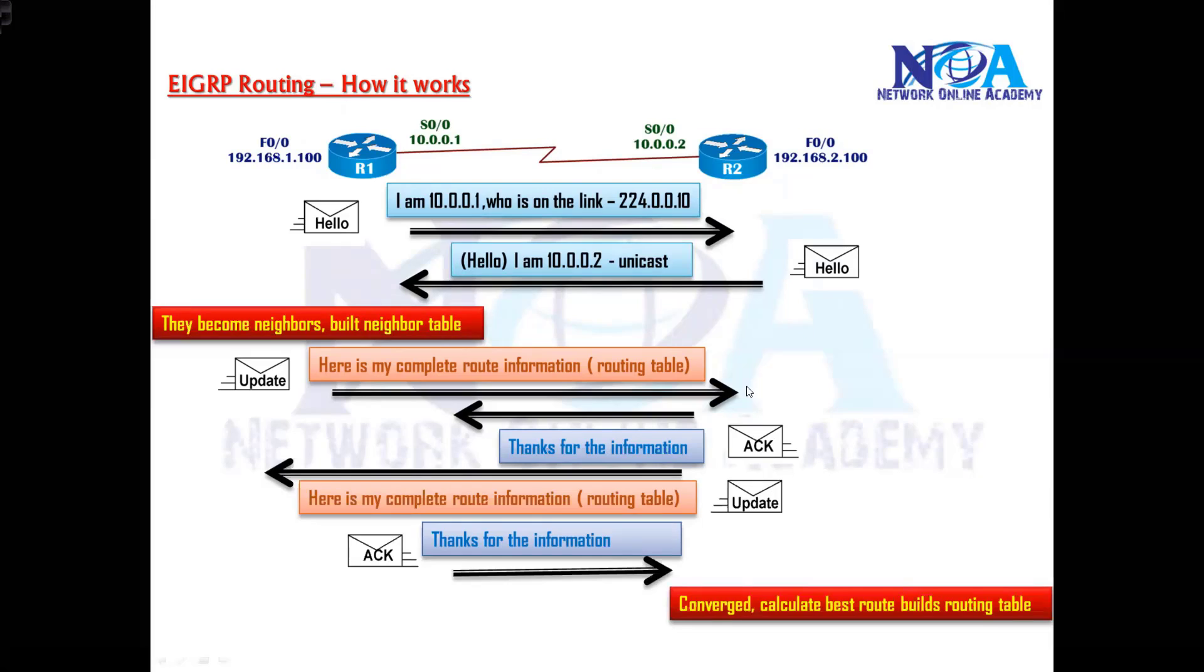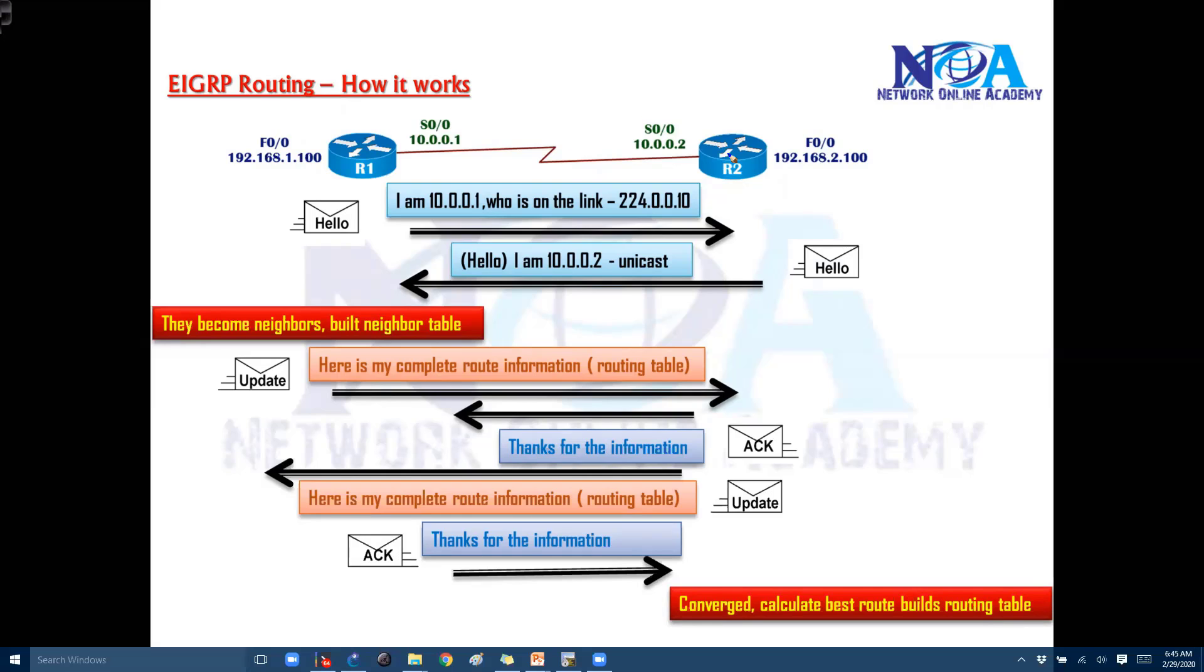And once they exchange now they will have some kind of routing table convergence. And then what can happen is like router 2 is sending this network information from this side.